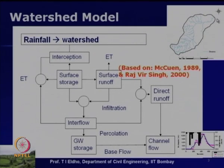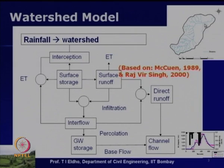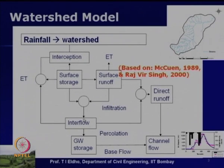All this direct runoff as overland flow will be going to the channel. If this is the watershed, you can see that from various small channels, a big stream forms for the watershed and runoff takes place through the channel to the outlet of the watershed. We may also have to include groundwater storage and groundwater processes. Surface water processes can be classified into overland flow components and channel flow components.